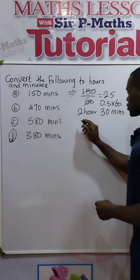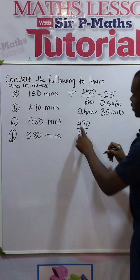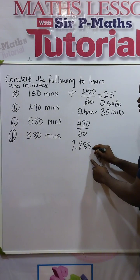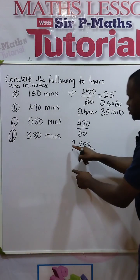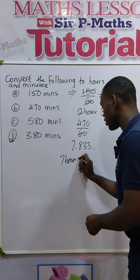Let's do the second one. We have 470 divided by 60. If I divide here, I will have 7.83333. This is a recurring decimal. So taking the whole number as your hour, you have 7 hours.